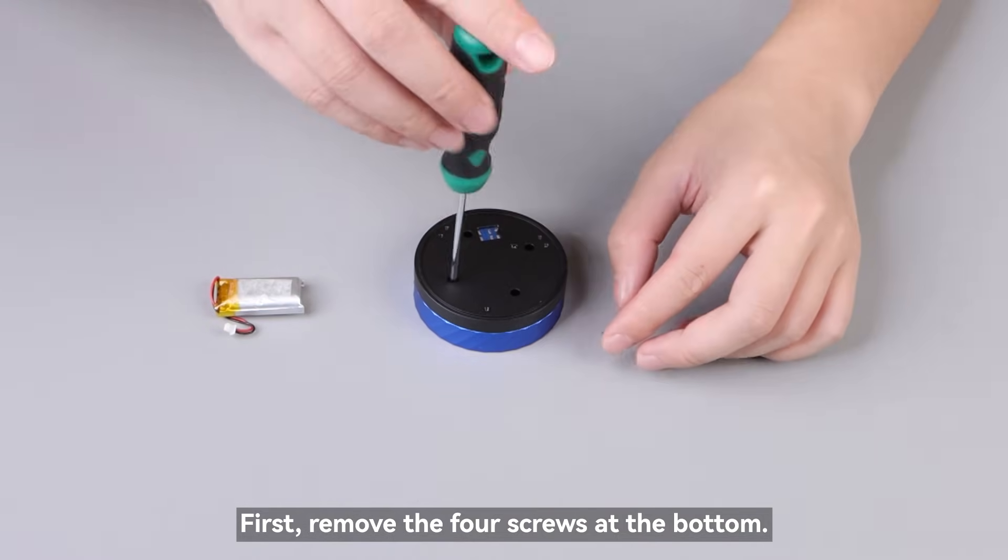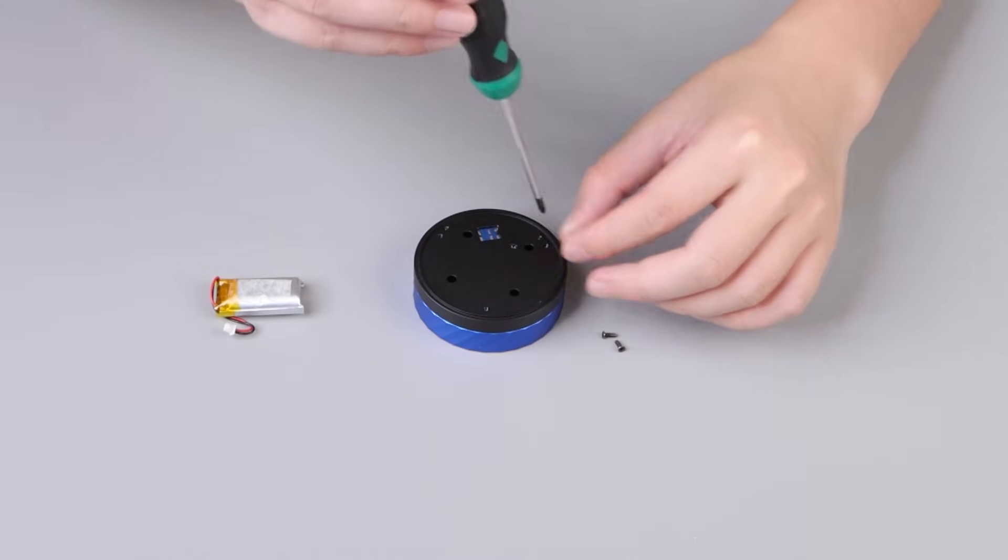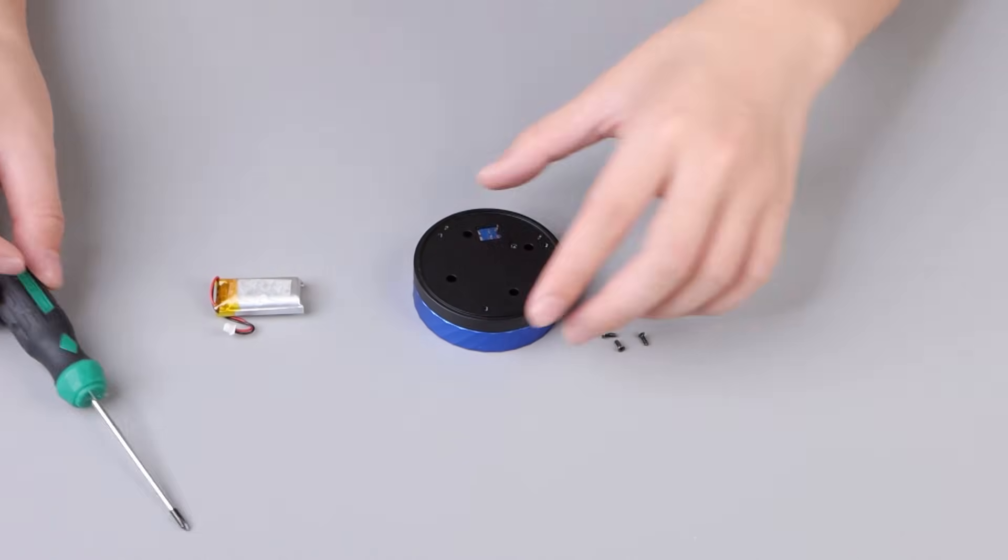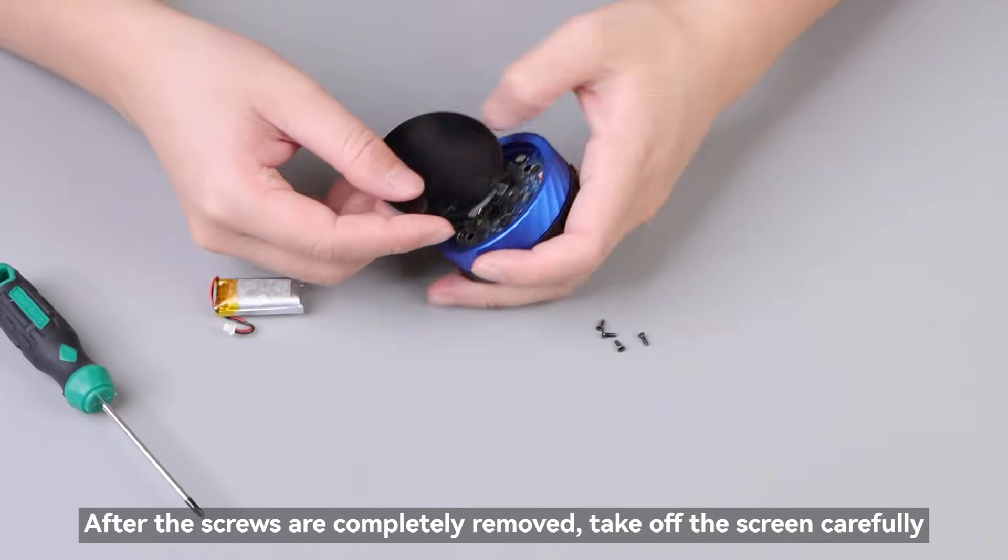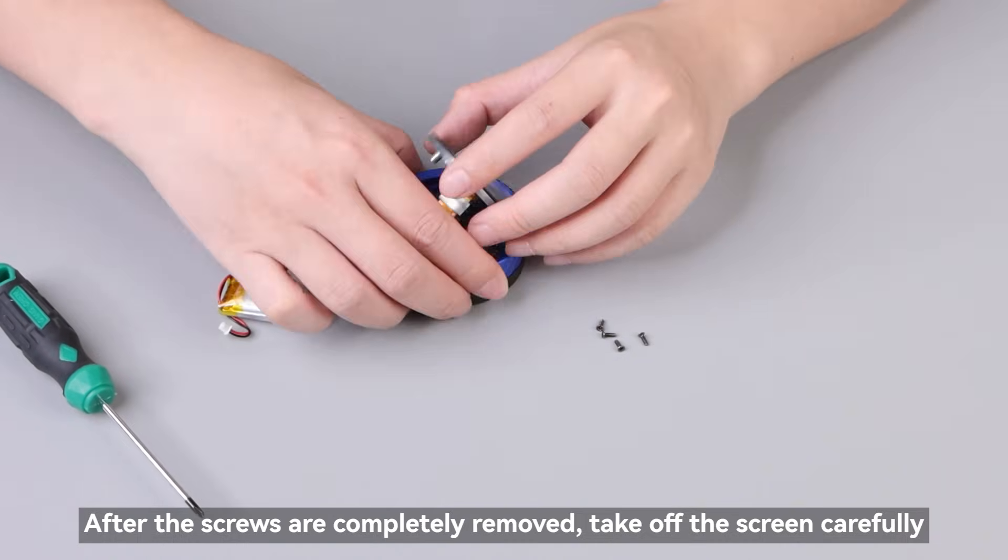First, remove the four screws at the bottom. After the screws are completely removed, take off the screen carefully.